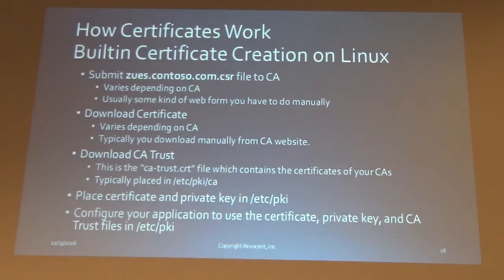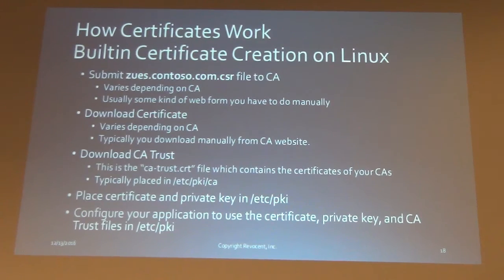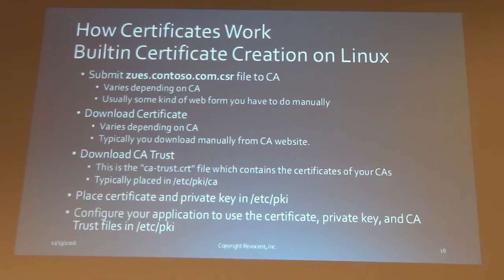Once you have the CSR file, you can go to a commercial CA like VeriSign or GlobalSign and say, here's my CSR — cut and paste it. You can get your certificate that way after paying them some money. You then download and install the files. One important thing is when you do this, the CA trust has to be updated as well. If you go to some of the really cheap CAs, they might not be trusted by your web browser, so you'll have to get their CA certificate and update your web browsers.